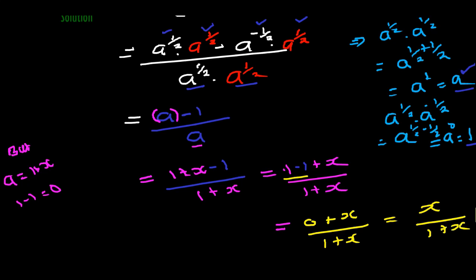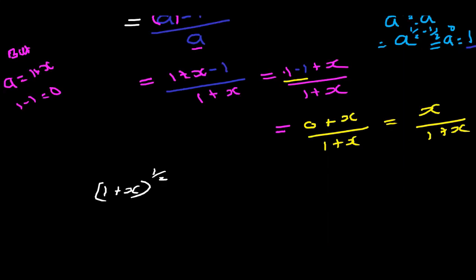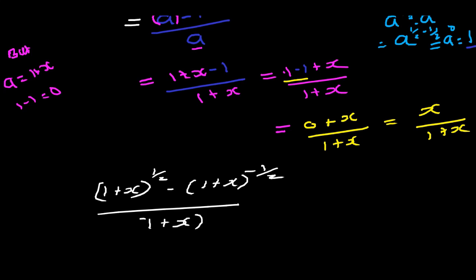The denominator is 1 plus x, so the simplest form of the expression is x over 1 plus x. The expression — 1 plus x raised to power half, minus 1 plus x raised to negative half, all over 1 plus x raised to power half — simplifies to x over 1 plus x. Example number 3 in the next video.